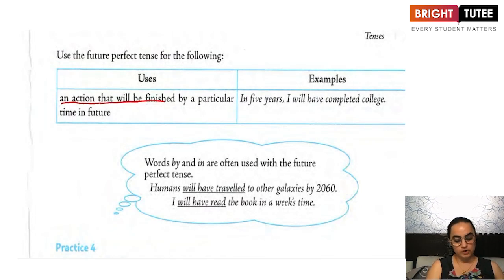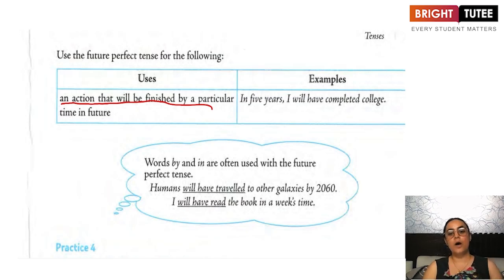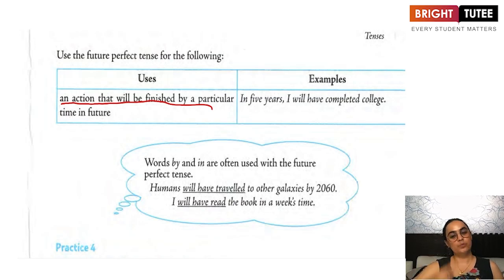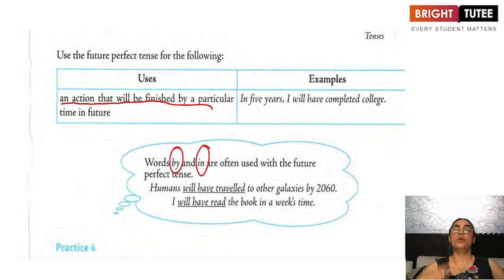For example: in five years, I will have completed my college. In ten years from now, I will have become a successful man. By tomorrow, I will have completed my project. Also, 'by' and 'in' are commonly used with the future perfect tense: we will have completed the work by 6pm tomorrow; will have done the project in a week's time.